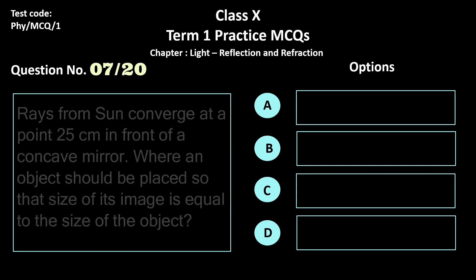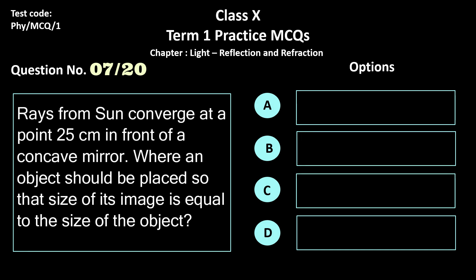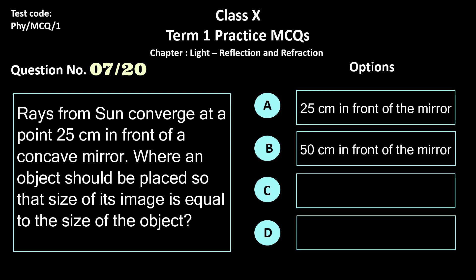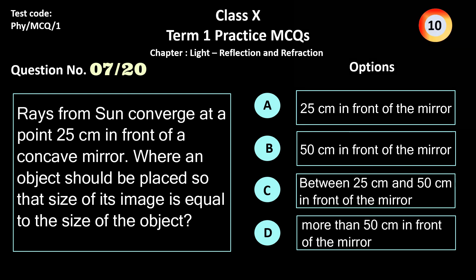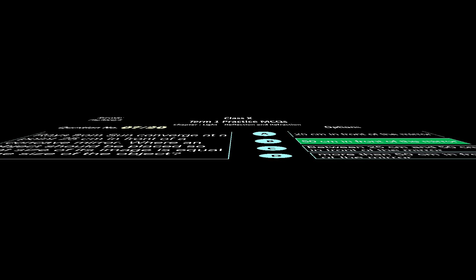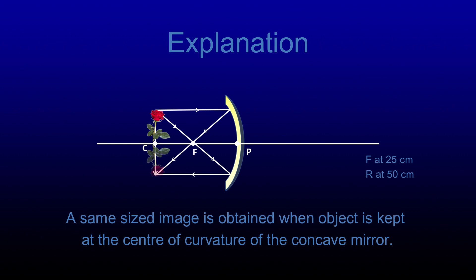Question 7. Rays from the sun converge at a point 25 cm in front of a concave mirror. Where should an object be placed so that the size of its image equals the size of the object? Options: a) 25 cm, b) 50 cm, c) between 25 cm and 50 cm, d) more than 50 cm in front of the mirror. The correct answer is option b, 50 cm in front of the mirror. A same-size image is obtained when the object is placed at the center of curvature, which corresponds to 50 cm.